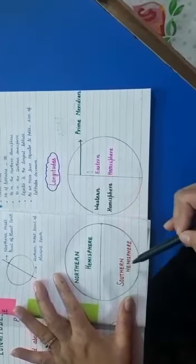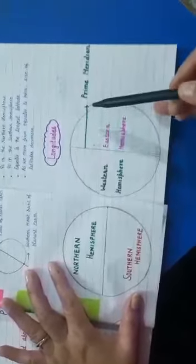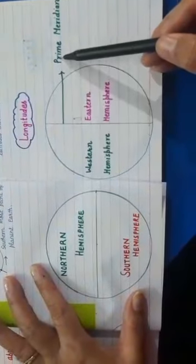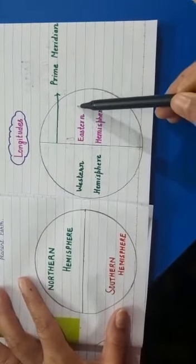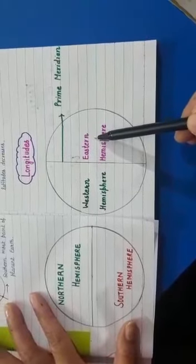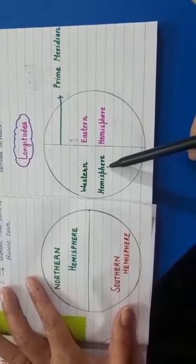Northern Hemisphere and Southern Hemisphere. The same way, the Prime Meridian divides the Earth into two equal halves: Eastern Hemisphere and Western Hemisphere.